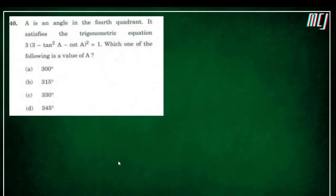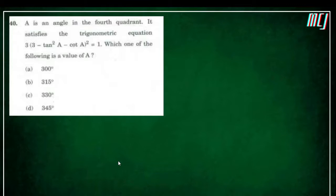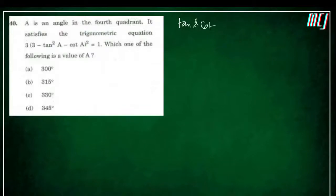The next question: if angle A is in the fourth quadrant and it satisfies the given trigonometric equation, we need to find the value of A. In the fourth quadrant, tan is negative.